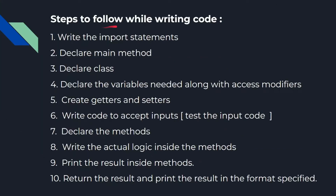These are the steps which we are going to follow while writing the Java code. First, we'll write import statements, then we'll declare the class, then we'll declare the variables along with the access modifiers. Then we are going to create getters and setters. After that we'll go to step 6, which is to accept inputs. Once we accept the inputs, we'll test our code to check whether it's accepting the inputs properly. Then we'll declare the methods, and after declaring the methods we will write the actual logic inside the methods. Then finally we'll print the results inside the method, and once we test that the results are okay, we will return the result and print it in the format specified in the question.